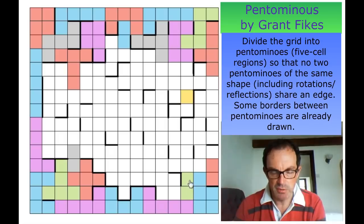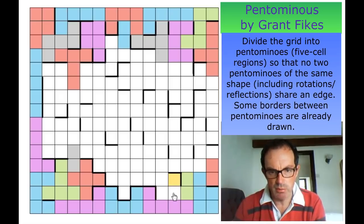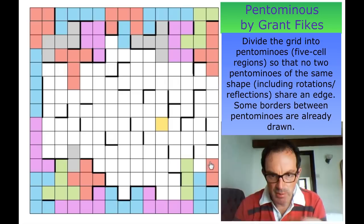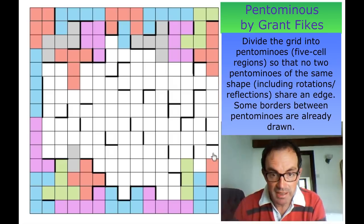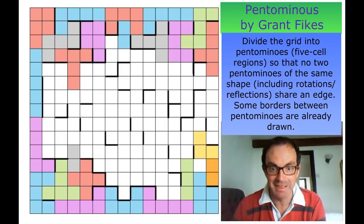So these two squares have to be part of a single pentomino — I'll make them green. This square is not part of the green pentomino. We can't have that shape because it would isolate this square, so this must go up again. The only way of getting this red one out without making a P pentomino — it must do that. This must be green.